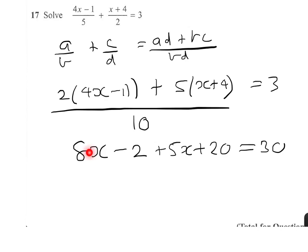So if we look here, we've got 8x and 5x is 13x. And we've got minus 2 plus 20 is plus 18 equals 30.